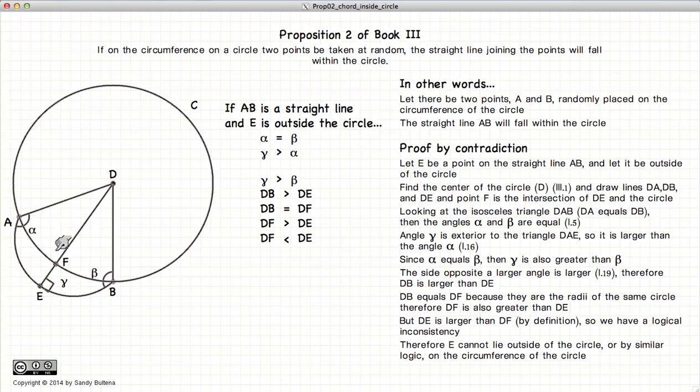So therefore, the line from A to B, the straight line A to B, must be within our circle. And thus we have shown or demonstrated the truth of this proposition.